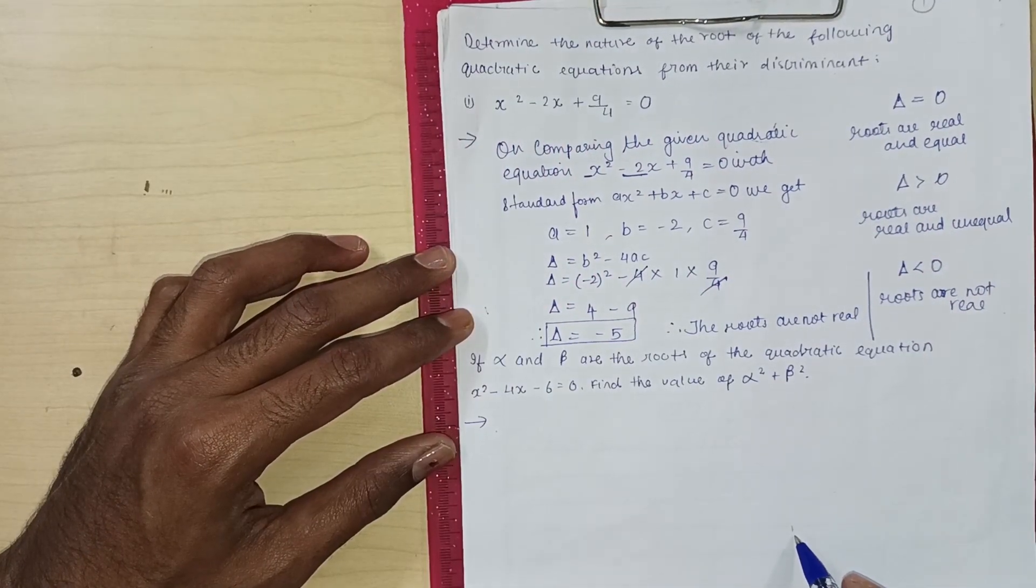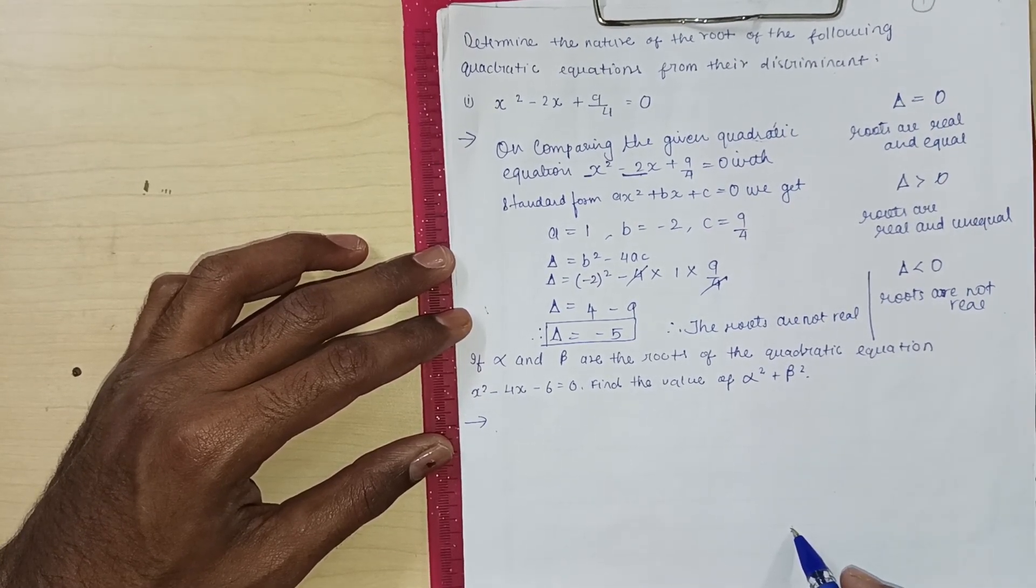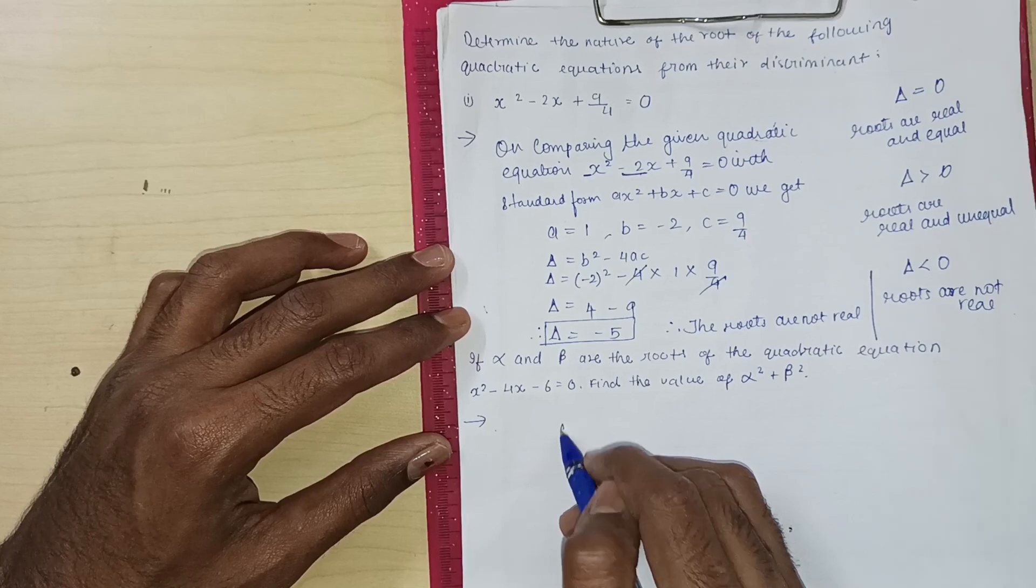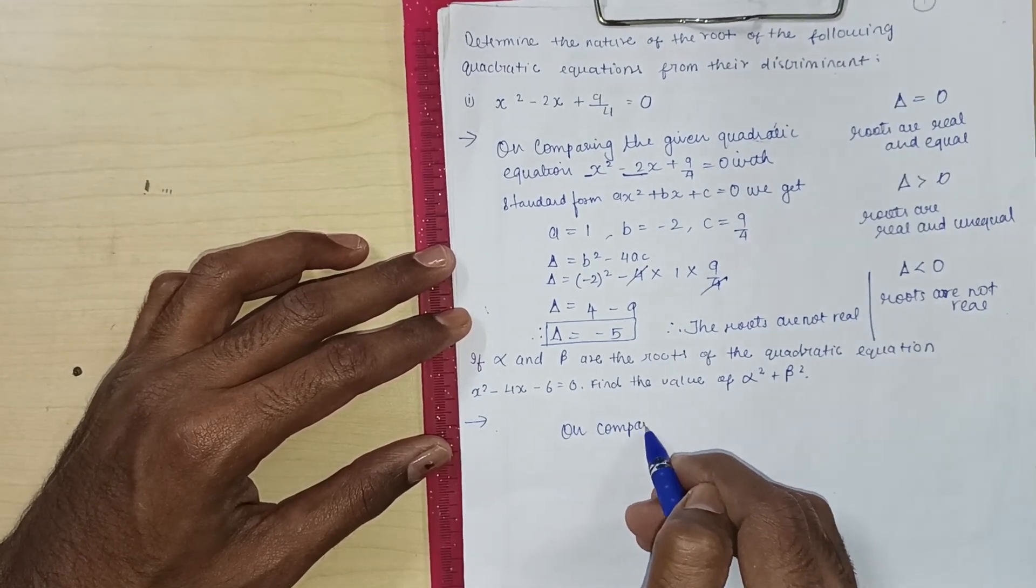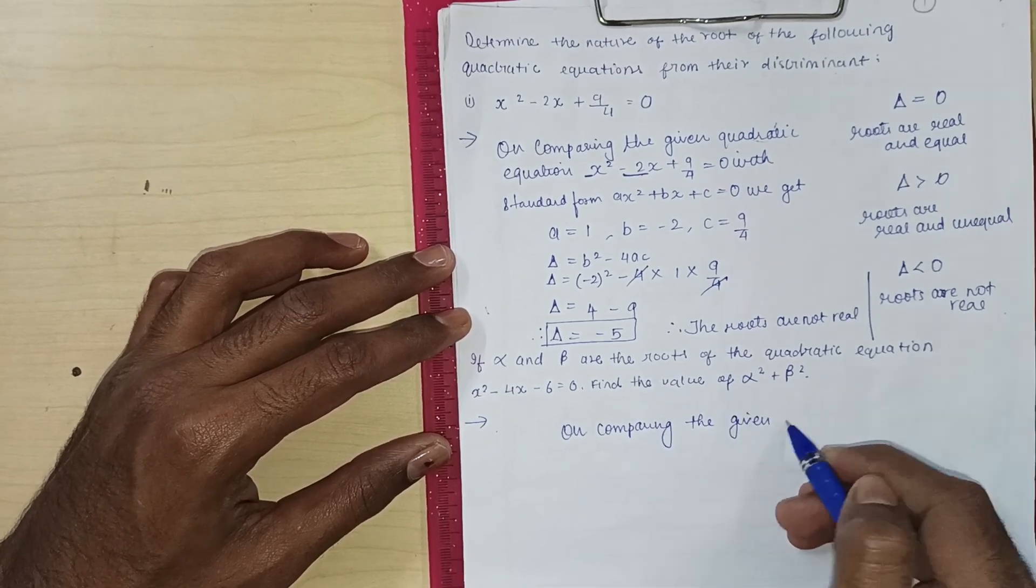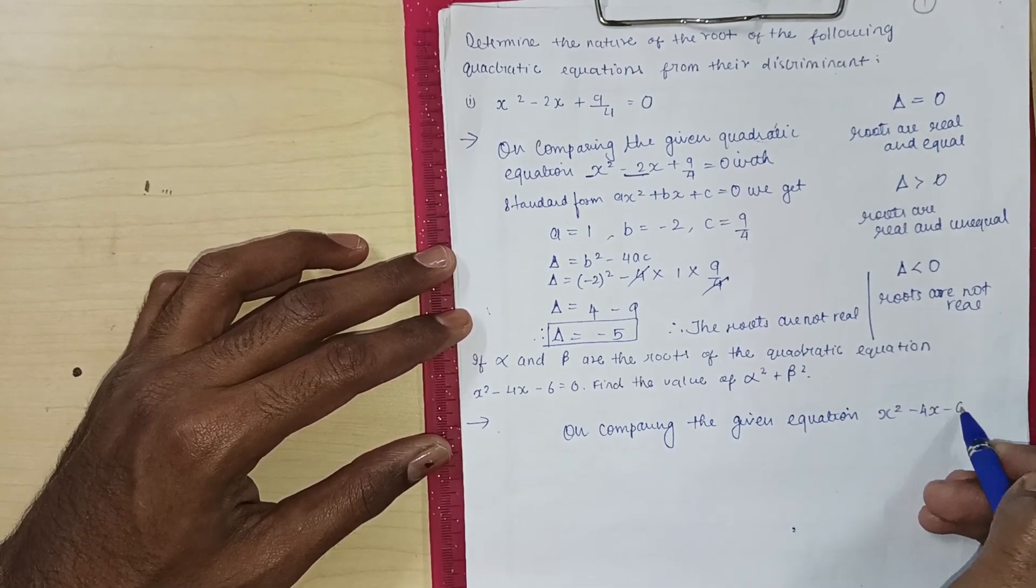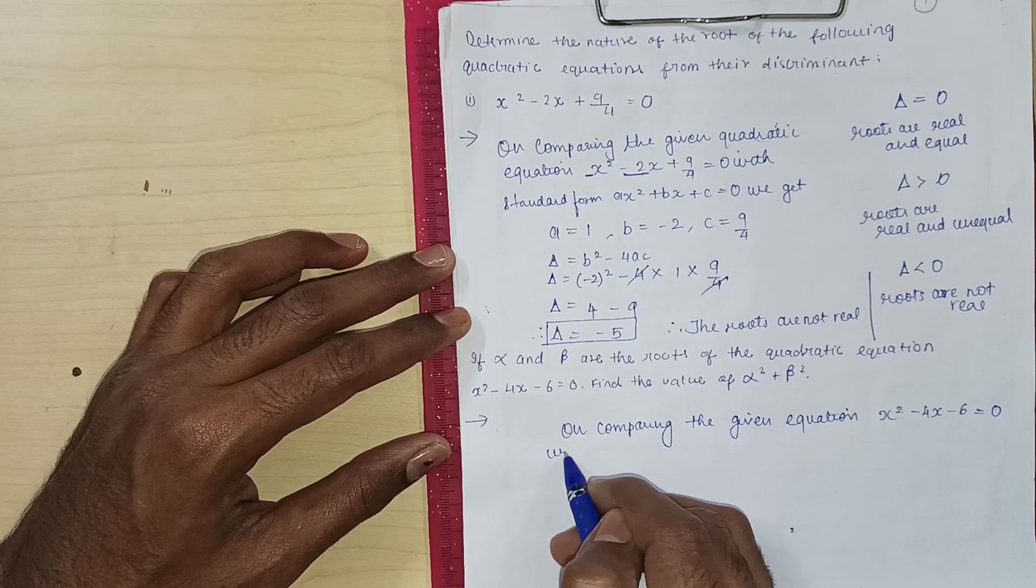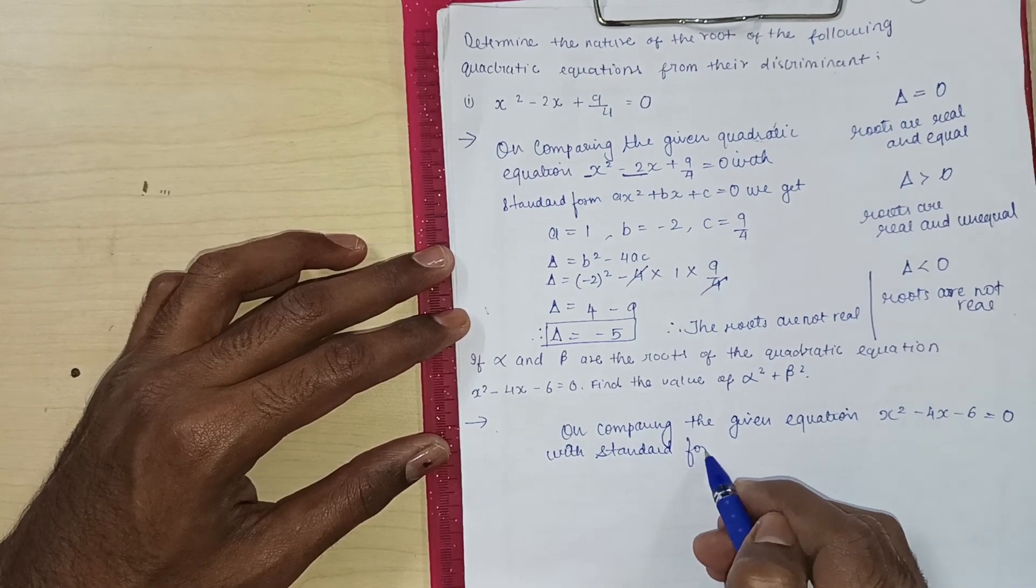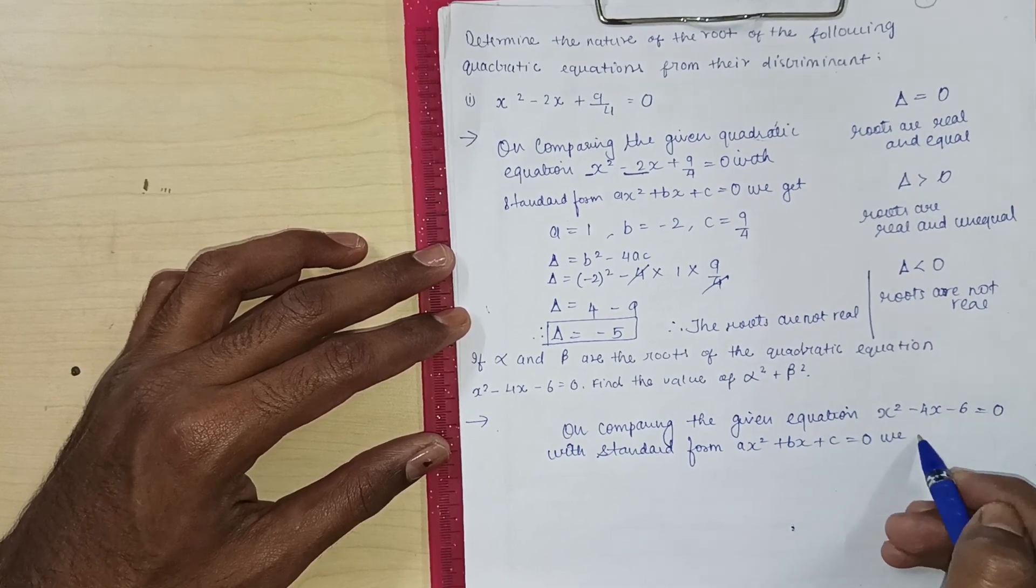If alpha and beta are the roots of the quadratic equation x square minus 4x minus 6 is equal to 0, find the value of alpha square plus beta square. Then we have to compare the given equation. On comparing the given equation x square minus 4x minus 6 is equal to 0 with standard form, with standard form x square plus bx plus c is equal to 0.